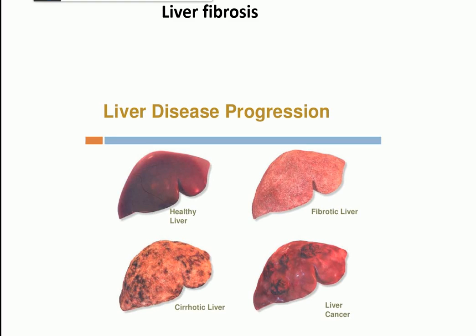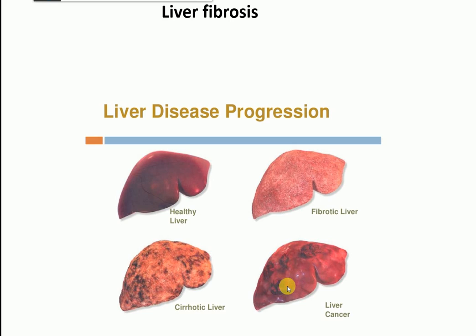Hello everyone, good morning. In this lecture today I'm going to talk about liver fibrosis and liver cirrhosis. Let me show you some pictures. This is a healthy liver - it looks really red and healthy. This is a fibrotic liver where scar formation has started. This is a cirrhotic liver with black scars in a more severe form. And finally, this is liver cancer where cancerous tissue and cancer cells are accumulated on the liver tissue.